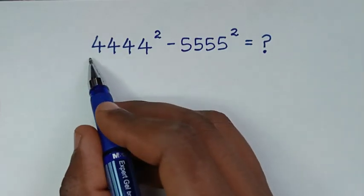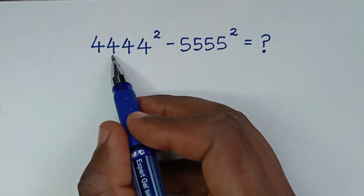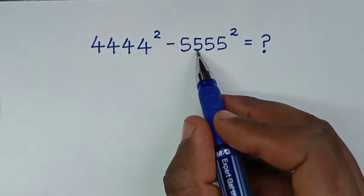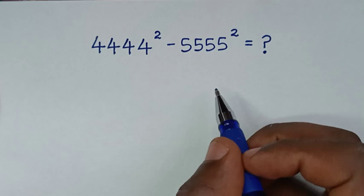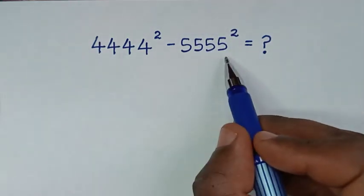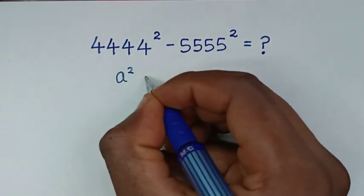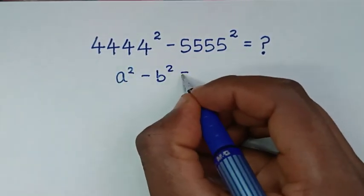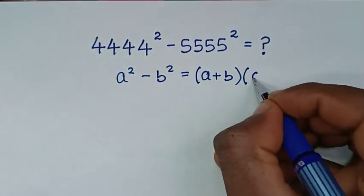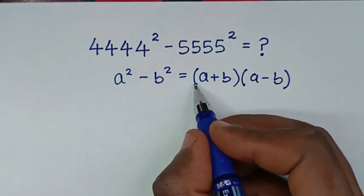Hello, you are welcome to solve this math problem which is 4,444 squared minus 5,555 squared. Our problem here is in the form of a difference of squares, so we'll apply the rule: a squared minus b squared is equal to (a + b) times (a − b). So we'll apply this form.